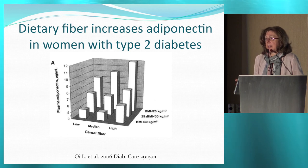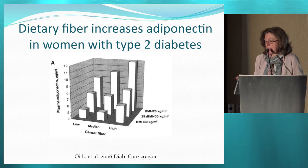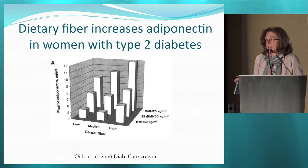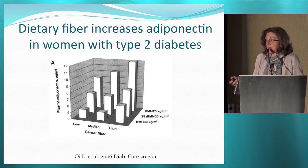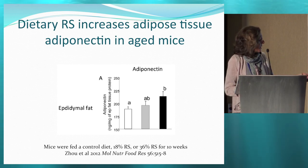This slide is from the Nurses' Health Study in women with type 2 diabetes. It shows the effect of generalized dietary fiber intake on adiponectin levels. Across the range of body mass index — lean, overweight, and obese individuals — greater cereal fiber intake is associated with greater serum adiponectin. This is particularly striking in the lean individuals.